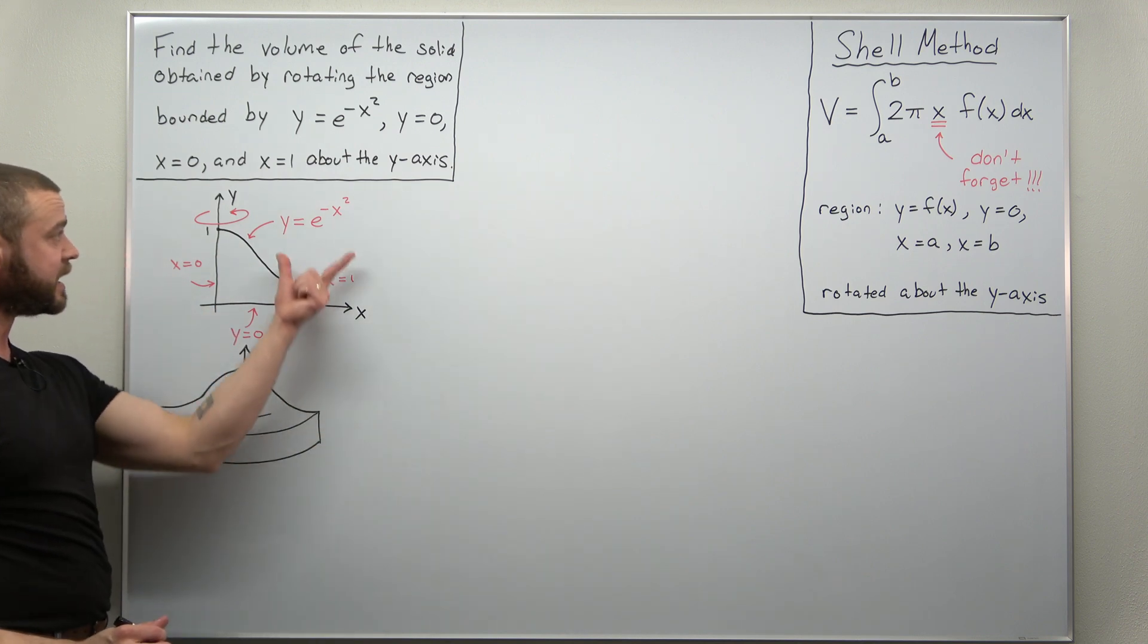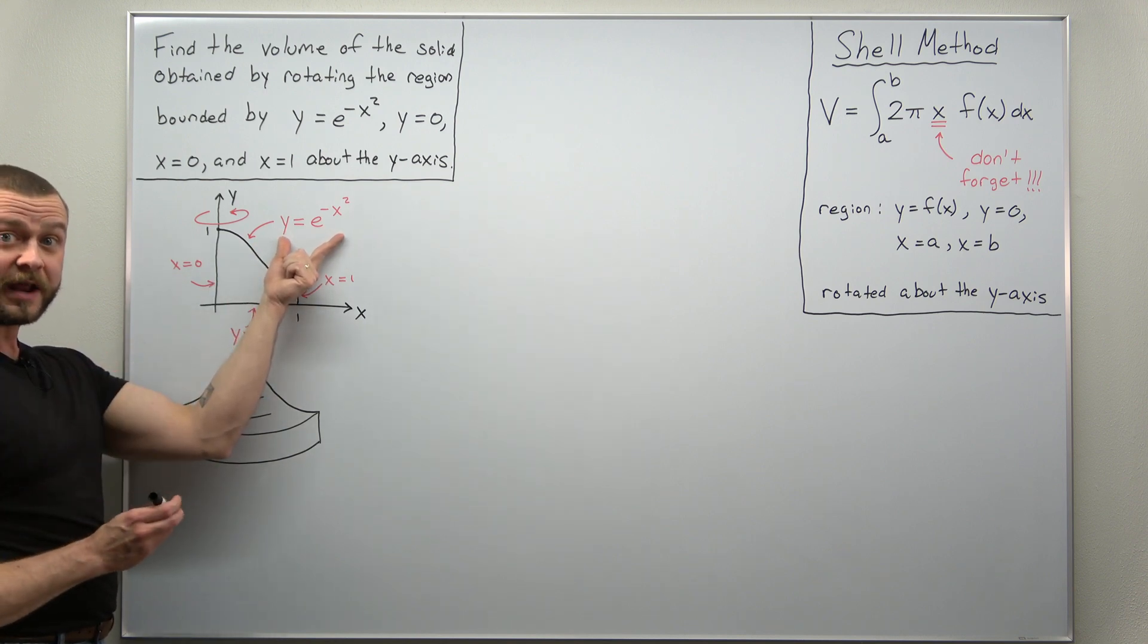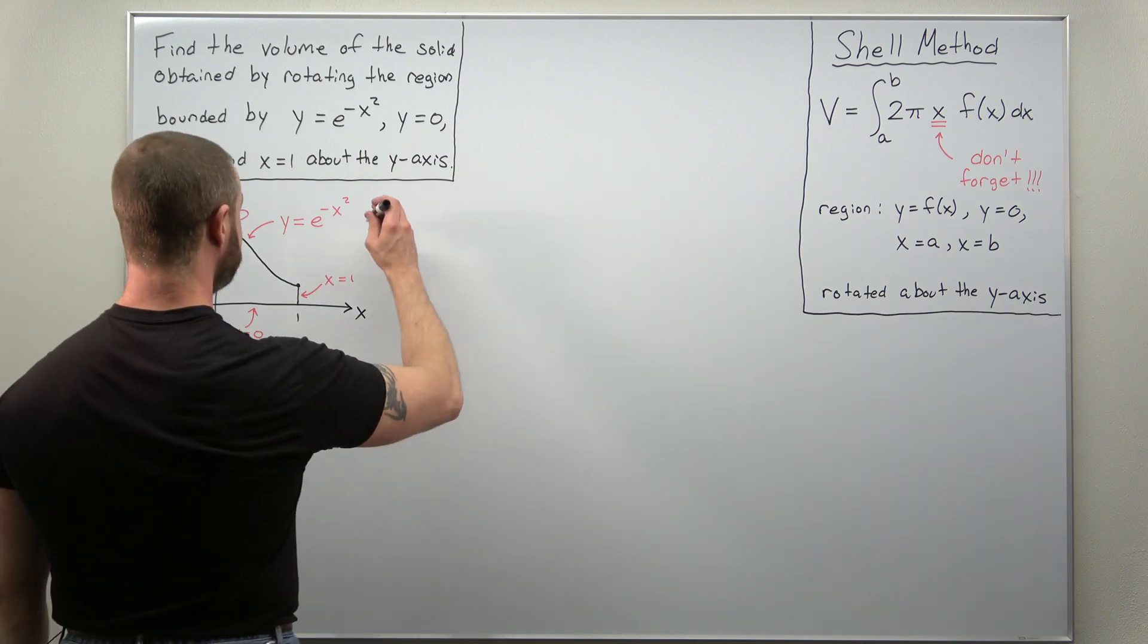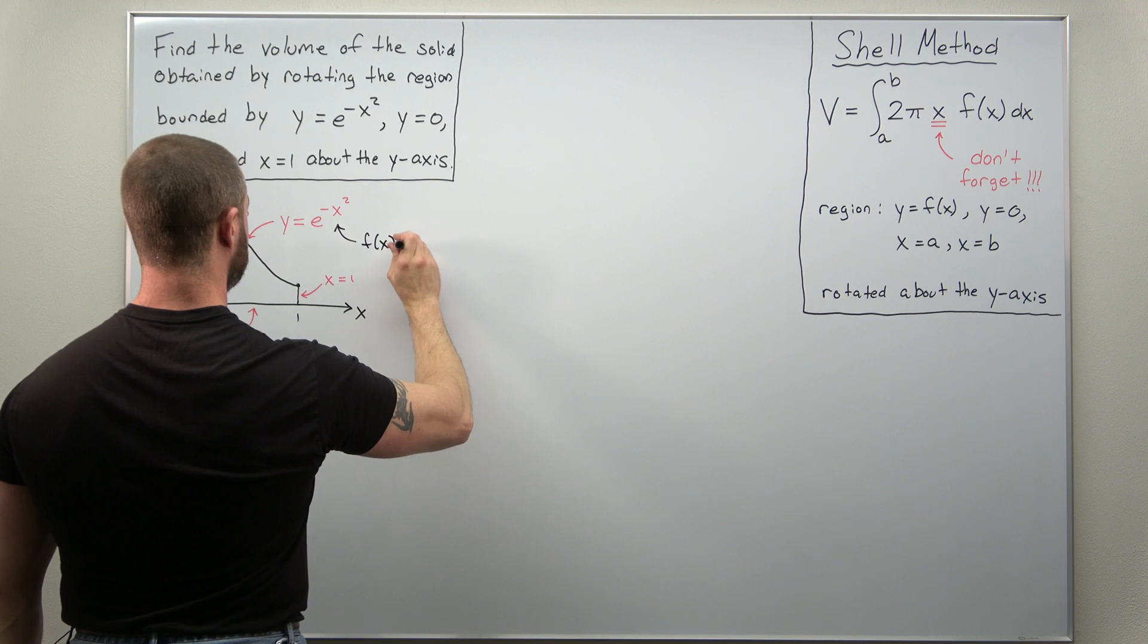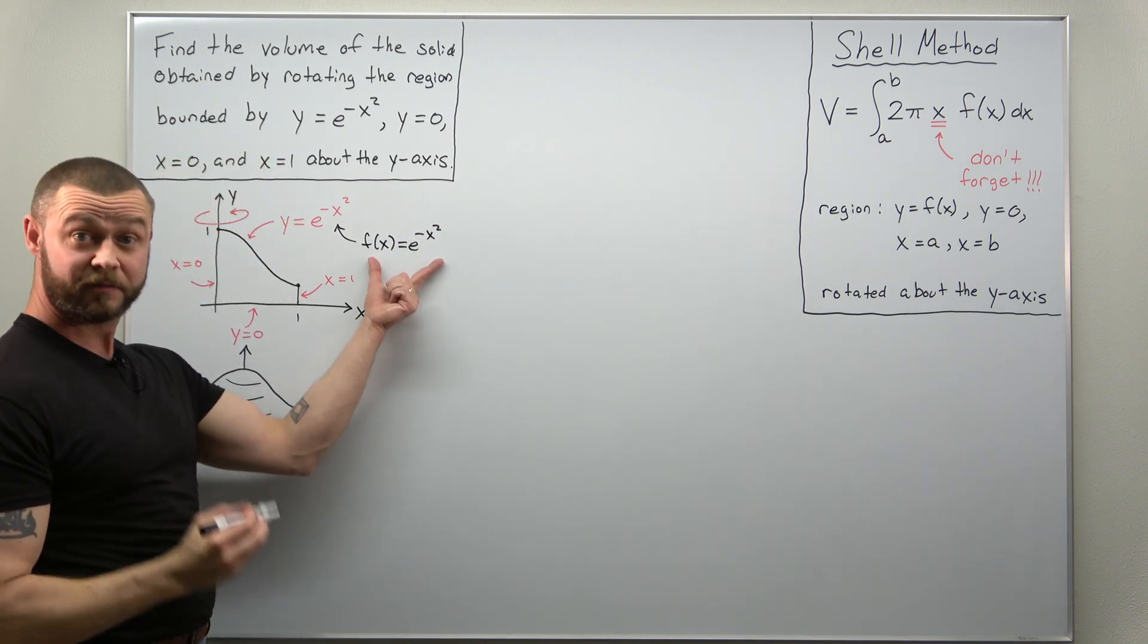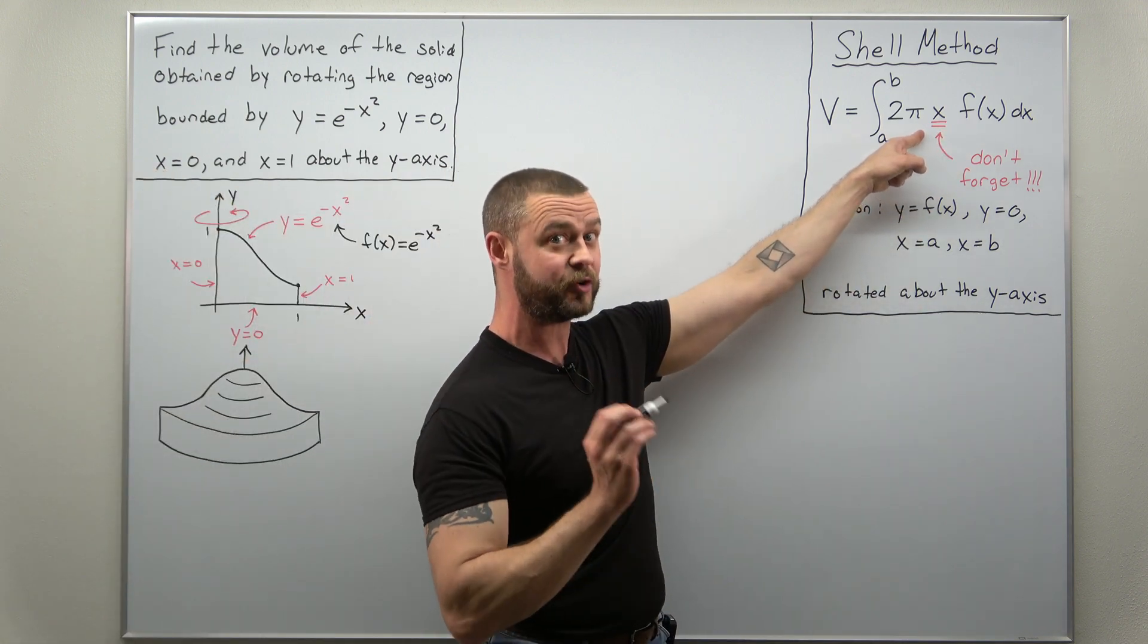All we need to do is take our upper boundary curve here for that region, y equals e to the negative x squared, and we're going to be using that in the formula there with f of x as e to the negative x squared. So we just need to basically take this function and plug it in and again don't forget about that factor of x.